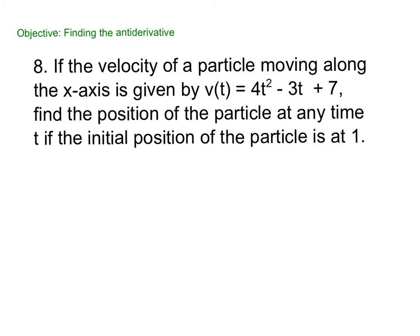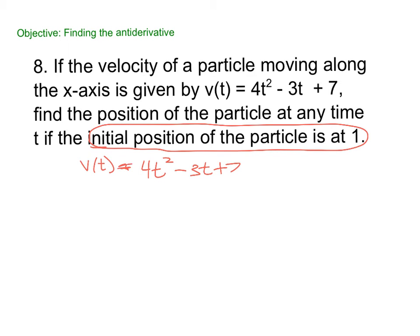All right. If the velocity of a particle moves along the x axis is given by v(t), find the position of the particle at any time. So remember, the derivative of position is velocity. So now we're going backwards. And they're giving me my initial position is at 1. My initial position is 1. All right. So if v(t) is 4t squared minus 3t plus 7, let's find x(t). Derivative of 4t squared is 4t cubed and then divide by 3 minus t becomes t squared. Have to divide by that 2 plus 7t and then plus C.